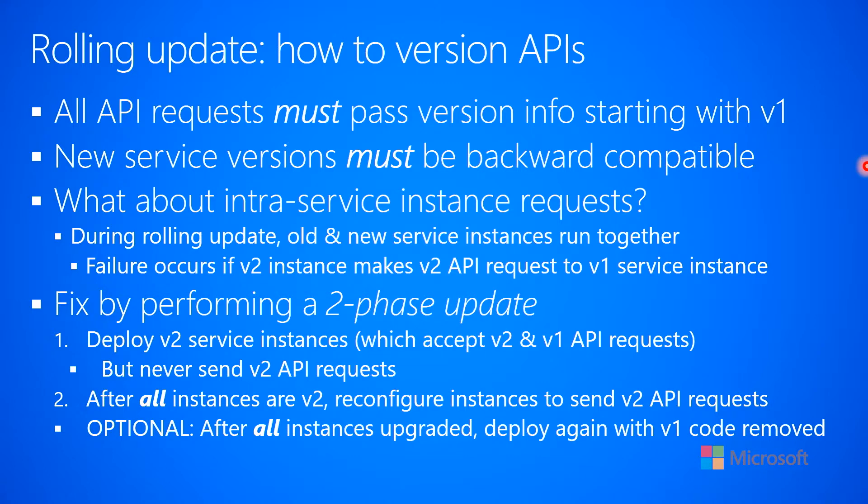The only downside of this is that you now have within your code base support for the v1 protocol as well as support for the v2 protocol. You might want to — and this is a big might — go and remove the code for the v1 protocol. As an optional step, after you know all the instances have been upgraded within the cluster and everything is talking v2, you could make a version 2.1 of your code that simply removes the v1 code, then update again from version 2 to version 2.1 in the cluster. Now everything is just talking v2 and all the v1 code has been successfully removed from the code base, so you don't have to drag that basically dead code along indefinitely.